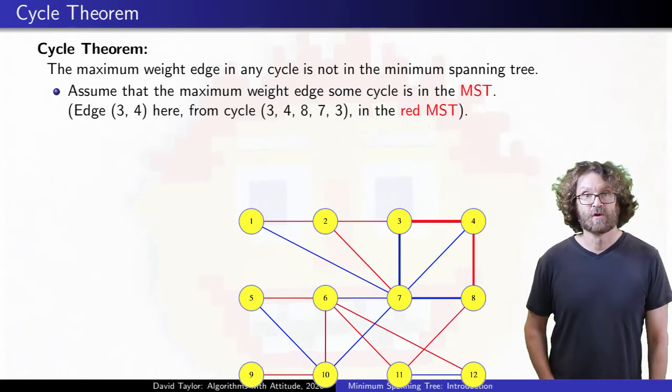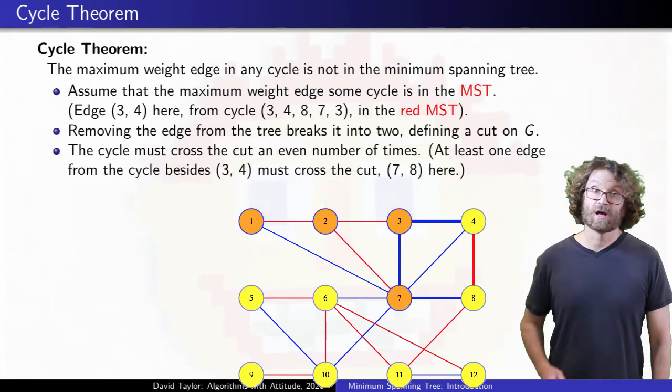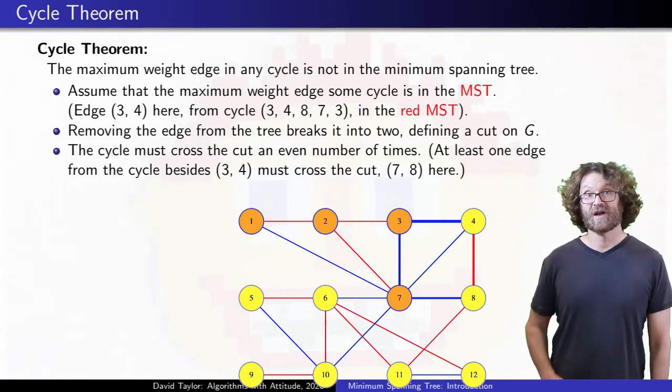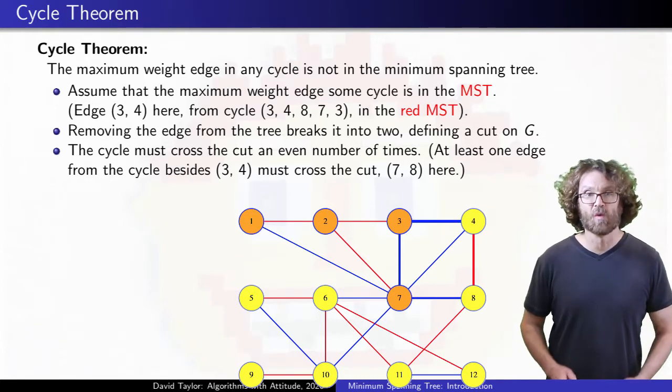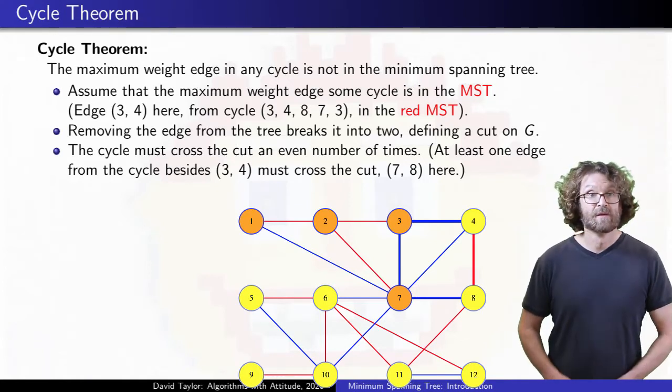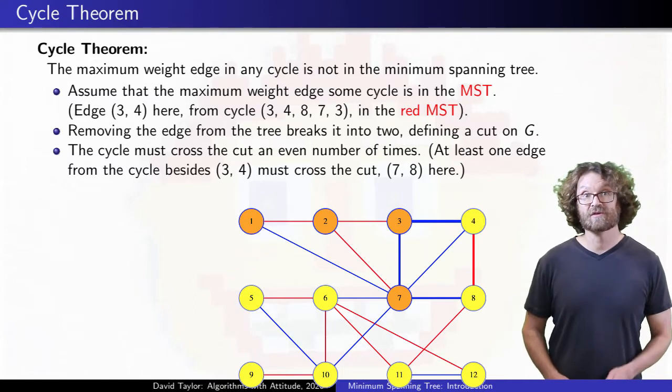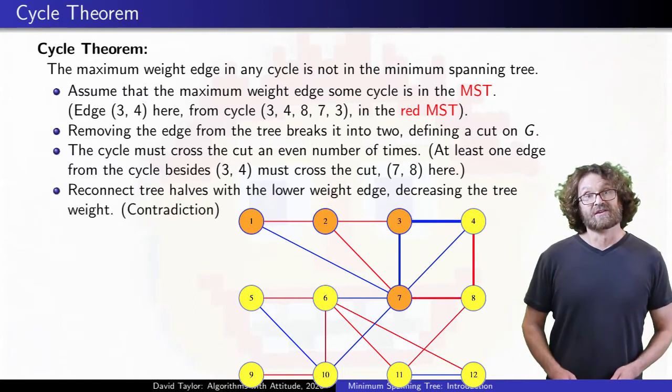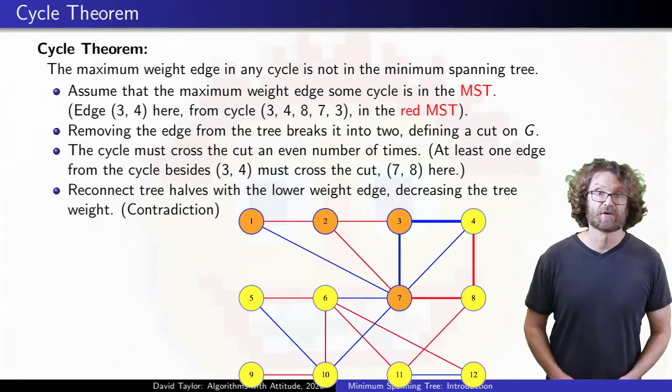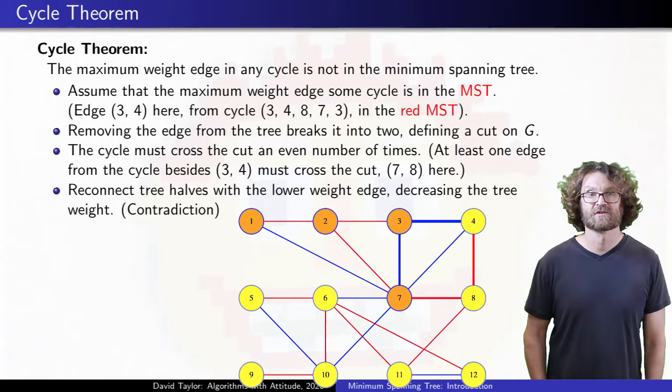Like in our unique spanning tree proof, removing the edge from the tree defines a cut in the graph. Like in our cut crossing proof, any cycle must cross the cut an even number of times, so besides the 3-4 edge, there must be at least one other edge in the cycle that crosses that cut, like the edge between 7 and 8 here. But the 3-4 edge was the maximum from the cycle, so the 7-8 edge weighs less. If we add the 7-8 edge to the remaining edges from the tree, it reconnects that tree to give a cheaper spanning tree than the original, a contradiction that the original tree contained the heaviest edge in the cycle.